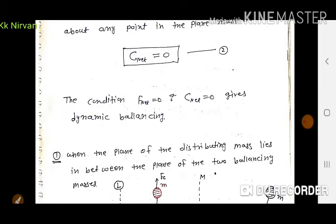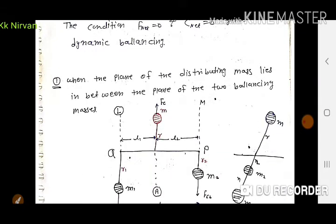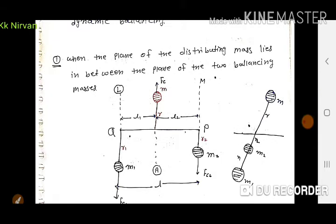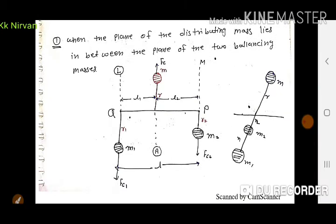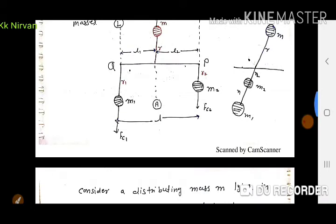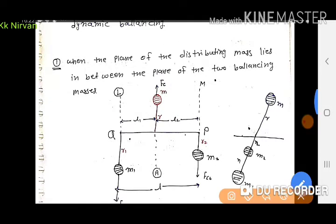For static balancing, only F_net = 0 is necessary. अब पहली condition देखते हैं: when the plane of the disturbing mass lies between the planes of the two balancing masses. हम दो counter masses का use कर रहे हैं और एक single rotating mass है। जब single mass दोनों counter masses के बीच में हो, तब क्या conditions होती हैं — वह हम देखते हैं।